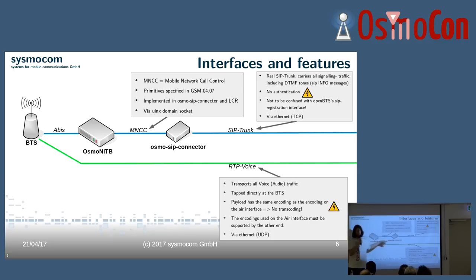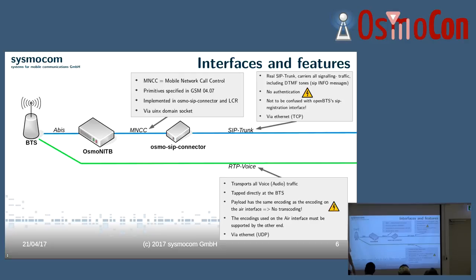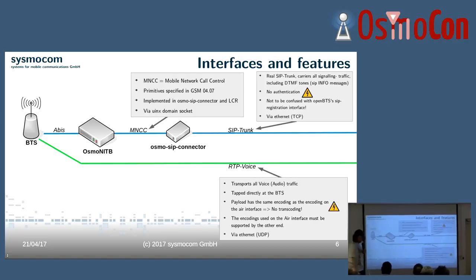There's no transcoding happening — no component in that stream whatsoever. It's just the encoding as you would have it on the air interface. That's a good and a bad thing at the same time: you get the undiluted RTP stream and can process it how you want, but your PBX software has to support the codecs you use on the air interface. Maybe the PBX has to do some transcoding. Of course, it's UDP — you already know that.